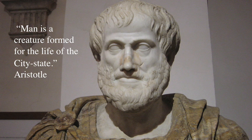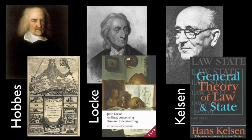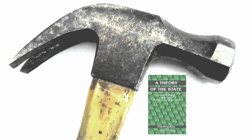Aristotle once wrote: 'Man is a creature for the life of the city-state.' Since then, hundreds if not thousands of books have been written about the nature of the state. Seen here are three of the best-known thinkers that have given their definition of what the state is. A sticky question regarding the state is whether it is a man-made invention or a natural occurrence — a product of human design, an invention such as a hammer.